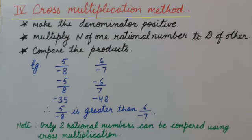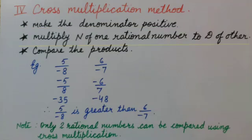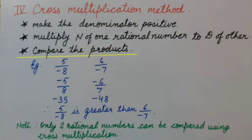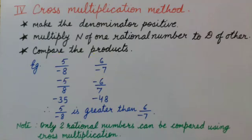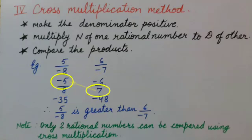The fourth method is the cross multiplication method. First we will make the denominator positive if it is negative, then multiply the numerator of one rational number by the denominator of the other rational number and compare the products. For example, to compare 5/−8 and 6/−7, we make denominators positive to get −5/8 and −6/7. The numerator of the first rational number, −5, is multiplied by the denominator of the other rational number, which is 7.